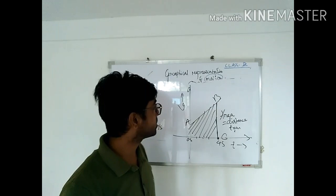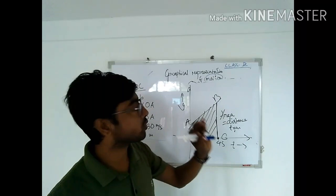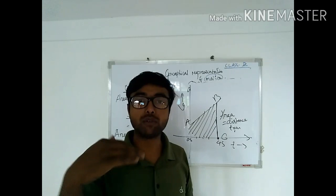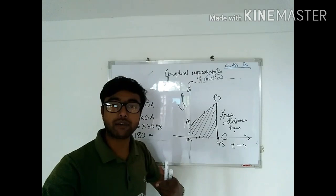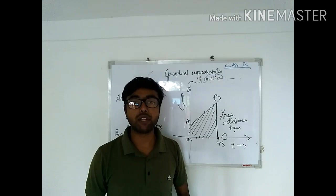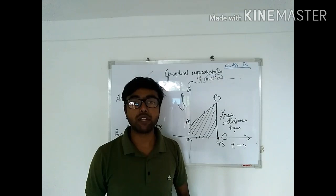So we have understood graphical representation: how uniform motion and uniformly accelerated motion are represented in a velocity-time graph, and how we can calculate the unknown distance using this graph. In the next video, I will cover a very important topic — equations of motion. There are three equations of motion we will be discussing.